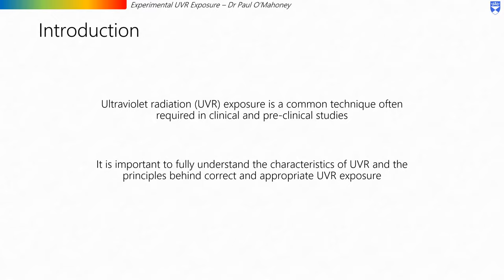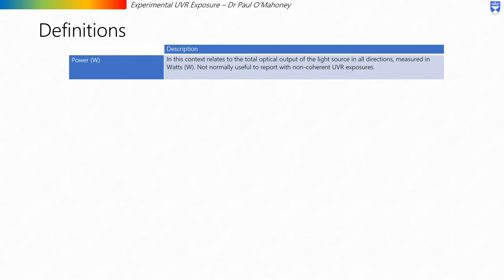To start with, we will first define a few terms necessary to explain further concepts. The first term is power. In this context, power relates to the total optical output of the light source in all directions, measured in watts. This is not normally useful to report with non-coherent UVR exposures, as quite often not all of the light output from a source is incident on a sample, and it gives us no information on how that power is distributed.